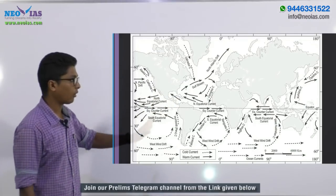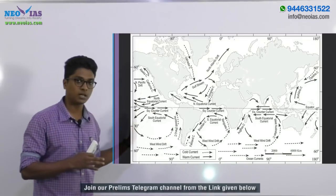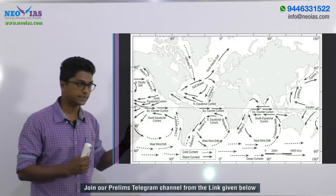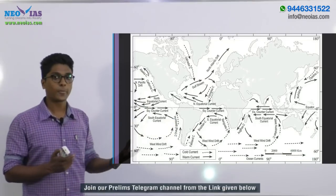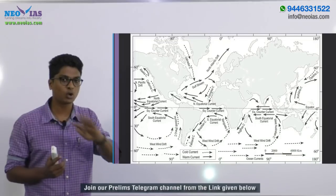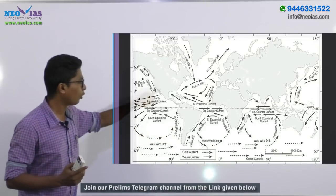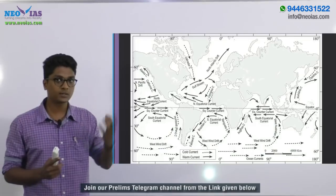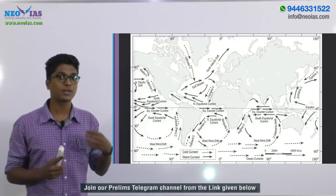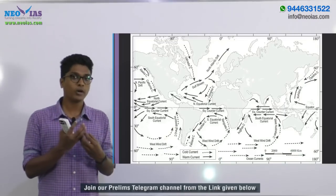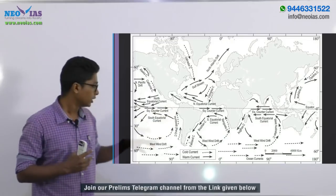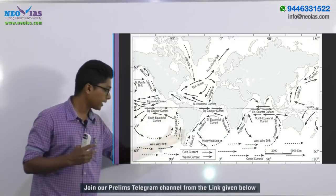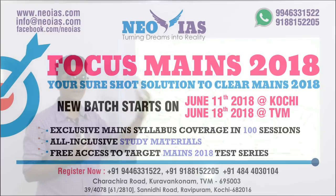All these deserts are located along the western margins of continents partly because cold currents are flowing through these regions. Cold ocean water has less capacity to carry moisture. Warm air can carry more moisture compared to cold air. Since we have cold oceanic currents, the air here is also cold, so the capacity to carry moisture is less over these regions.